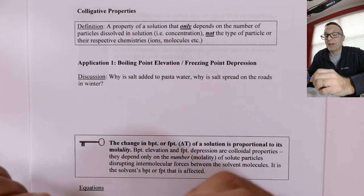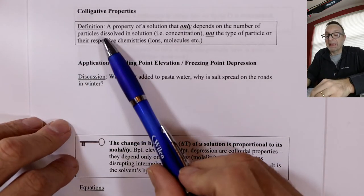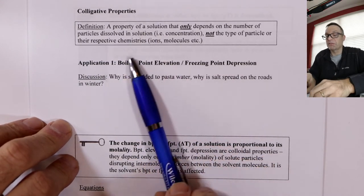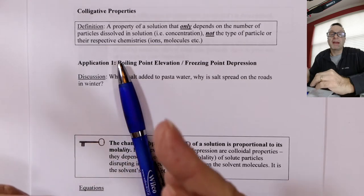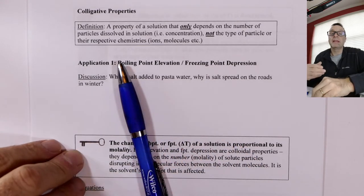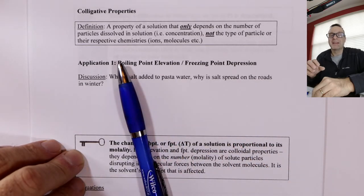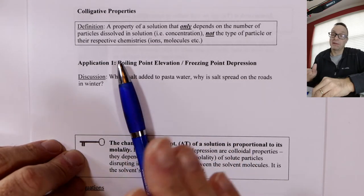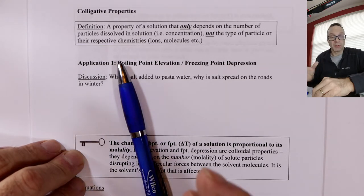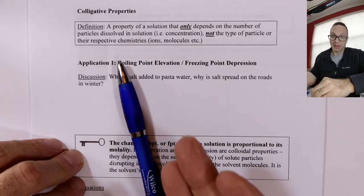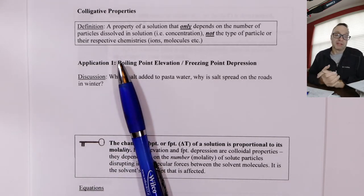Hi everyone. I'm going to start talking about some applications of solutions. We're going to start talking about colligative properties. Colligative properties are kind of interesting. They're all about solutions, and the properties we'll look at depend entirely on the concentration of the material or solute dissolved. What it actually does is count the amount of solute particles in terms of intermolecular forces — we're disrupting forces between solvent molecules. This has a number of interesting effects relating to boiling point, melting point, vapor pressure, and osmotic pressure.